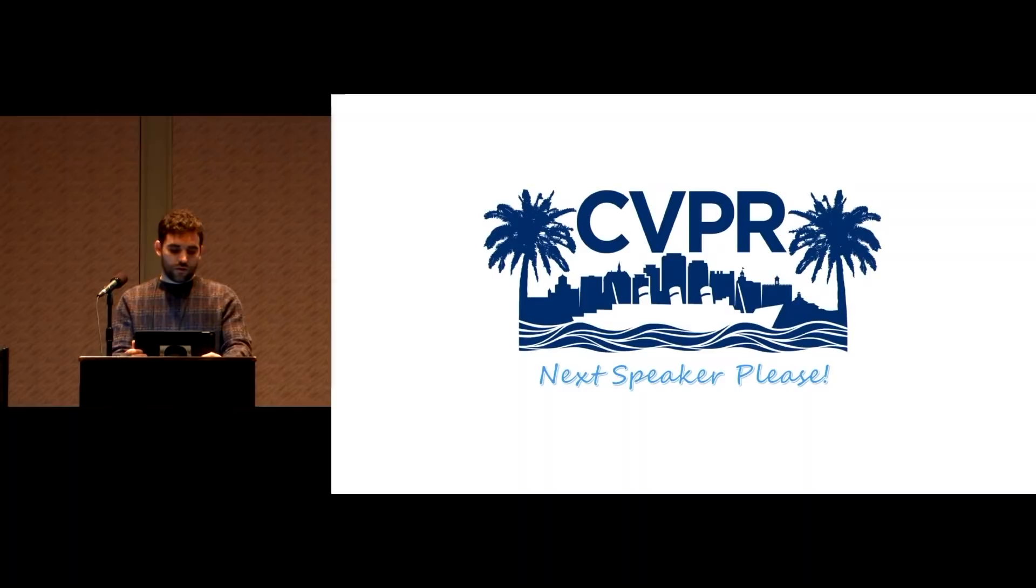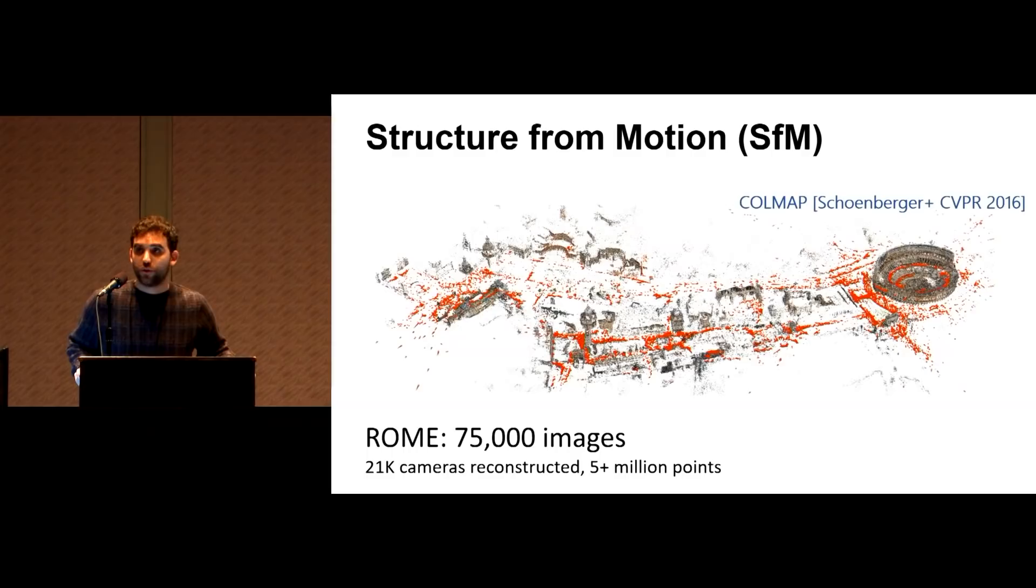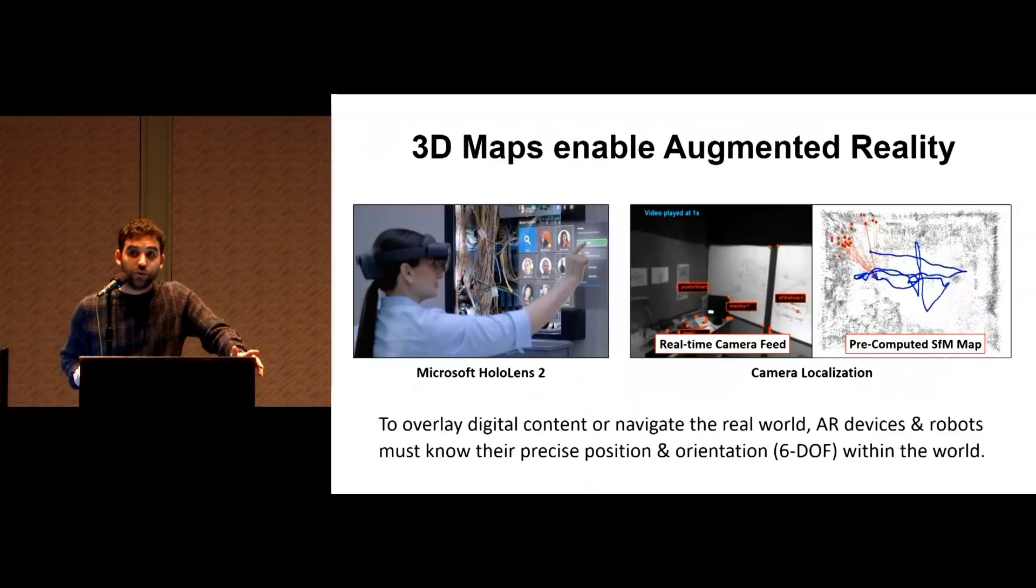Good morning. My name is Francesco Pittaluga, and my co-authors are Sanjeev Koppal, Sing Bing Kang, and Sudipta Sinha, and our paper is titled Revealing Scenes by Inverting Structure from Motion Reconstructions. So structure from motion is a process for generating a 3D map of a scene from a set of 2D images. Here we show a map of Rome that was estimated from 75,000 tourist images. And these kind of maps are pre-computed for later use for many applications. One such application is augmented reality.